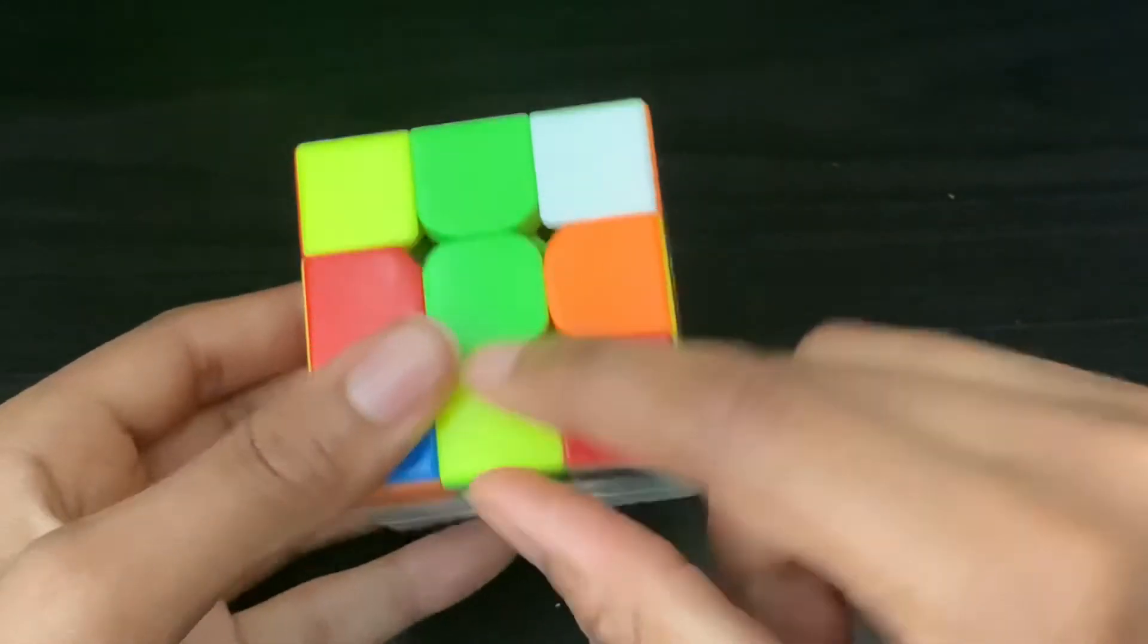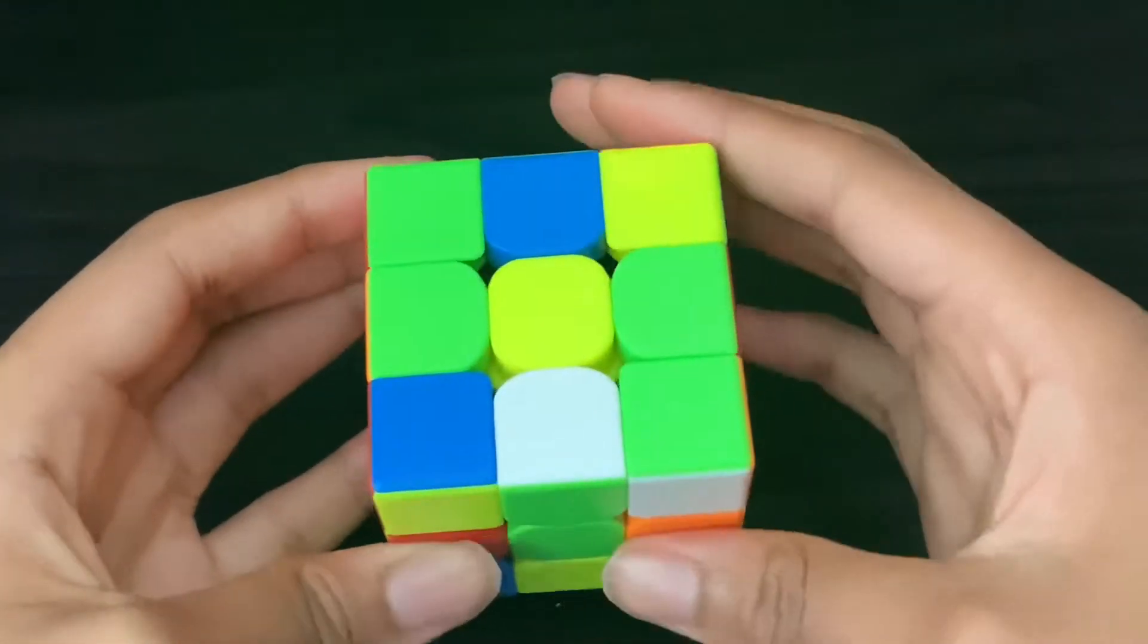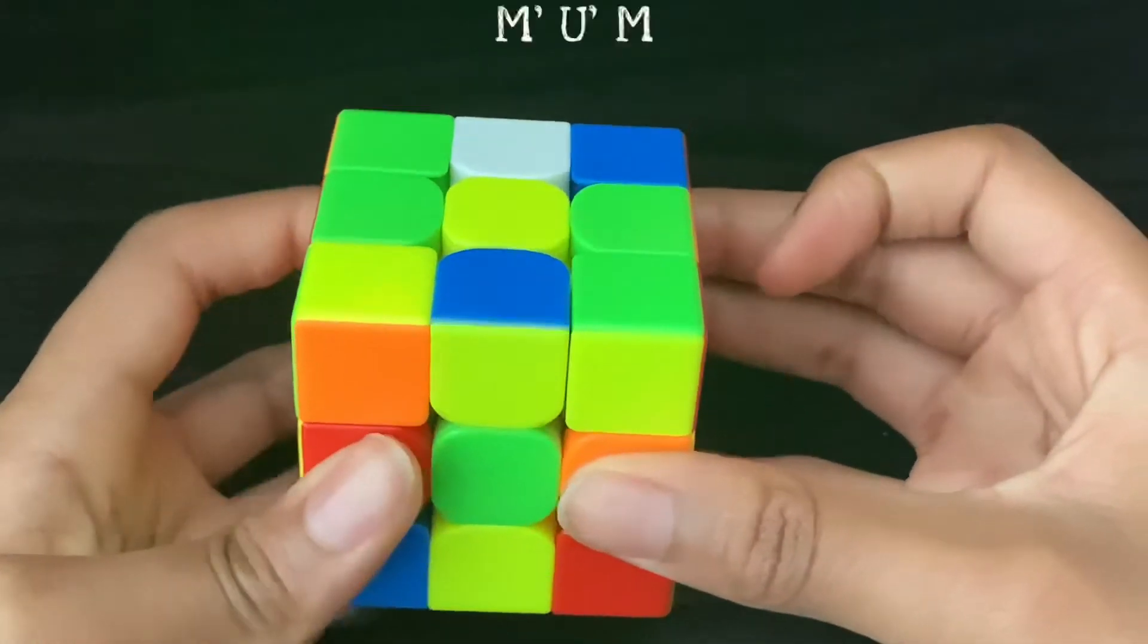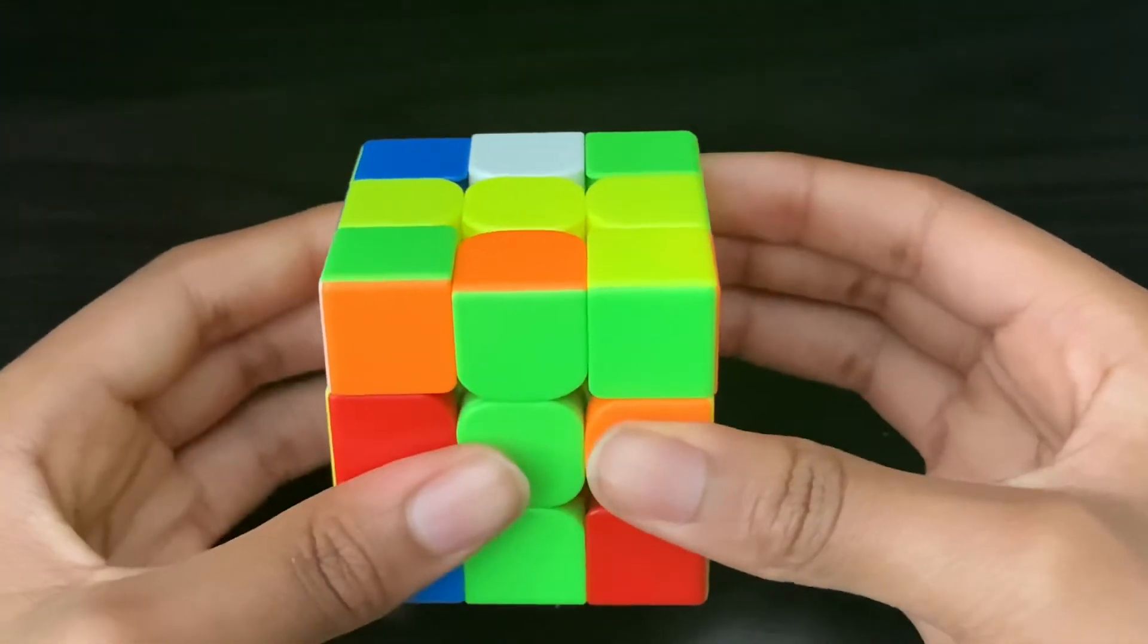Now you put all three of the bad edges on top so that they're in front, and then you can do this trigger M' U' M. Now all of your edges are oriented.